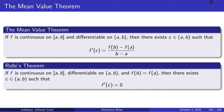Related to the mean value theorem is Rolle's theorem, which says: if f is continuous on a closed interval a to b and differentiable on the open interval a to b — so far it's the same as the mean value theorem — but here's the extra hypothesis: f of b equals f of a. Then there exists some point c in the open interval a to b such that f prime of c is zero.